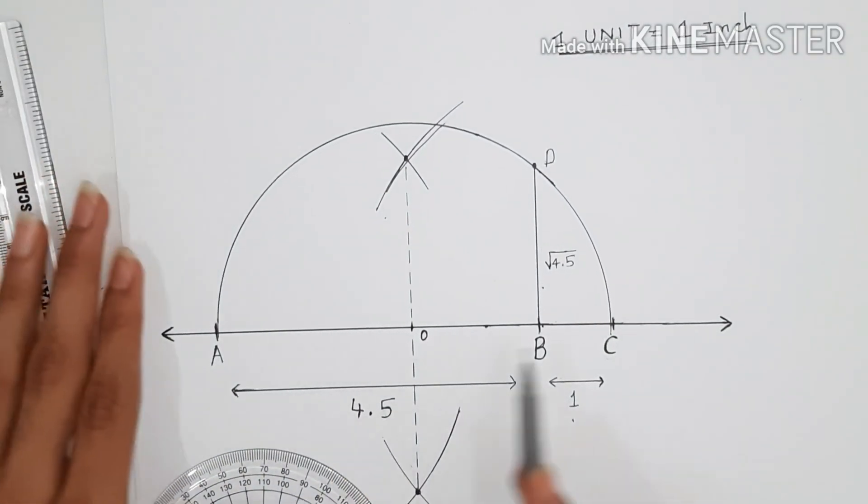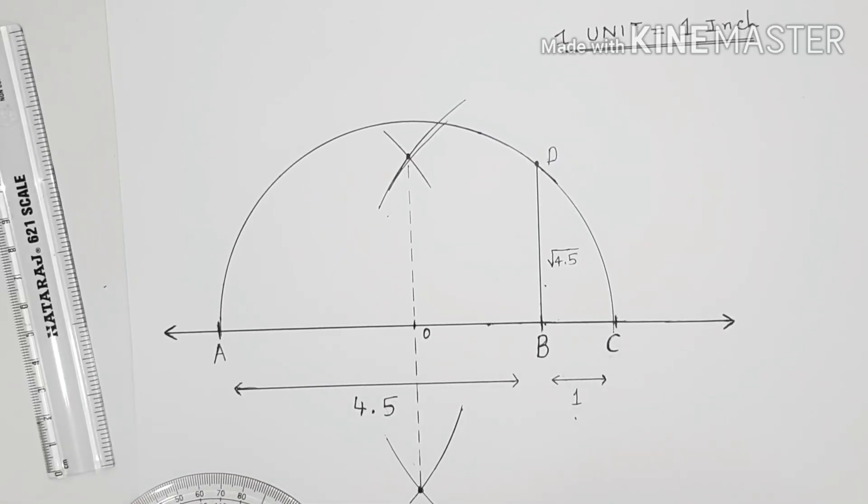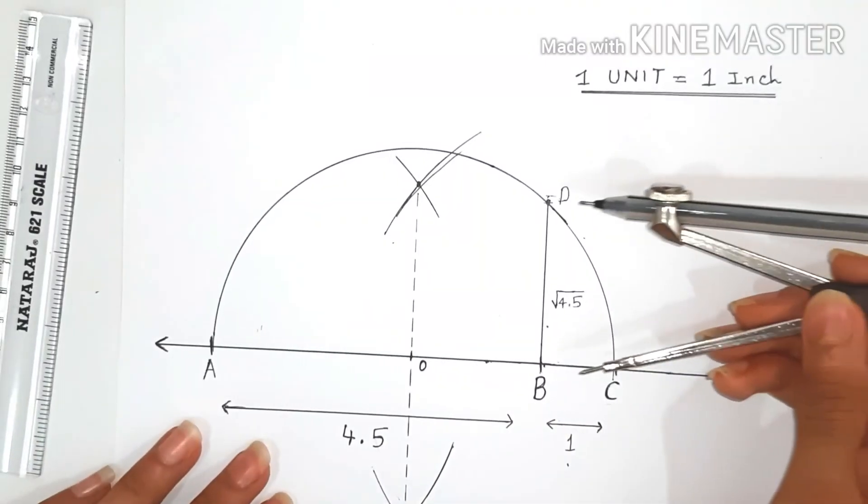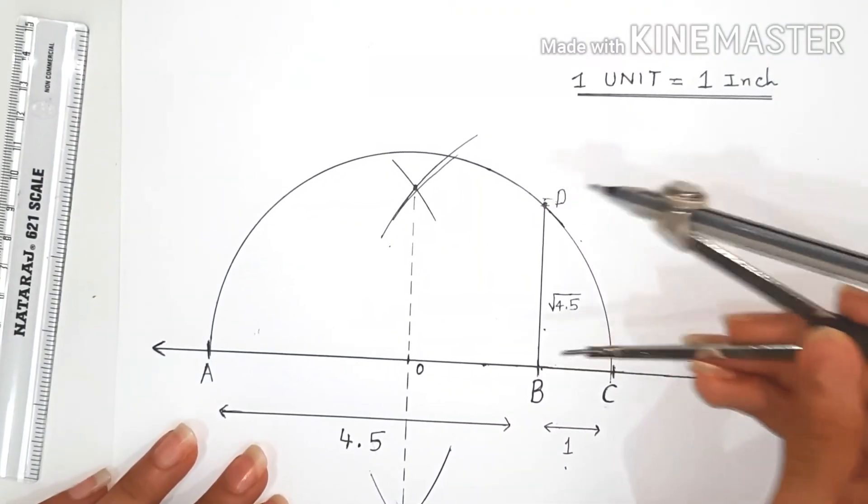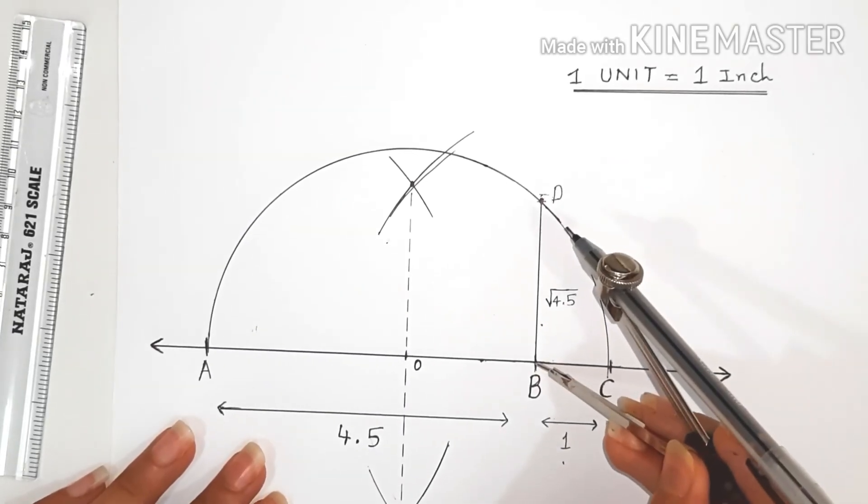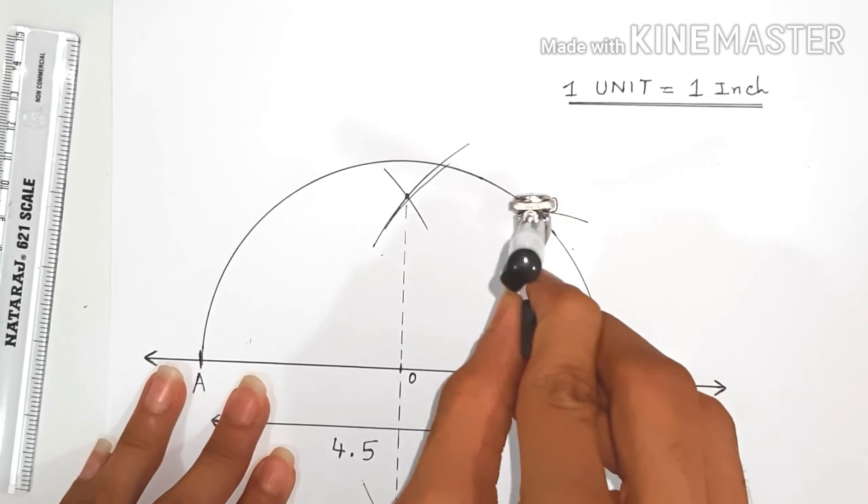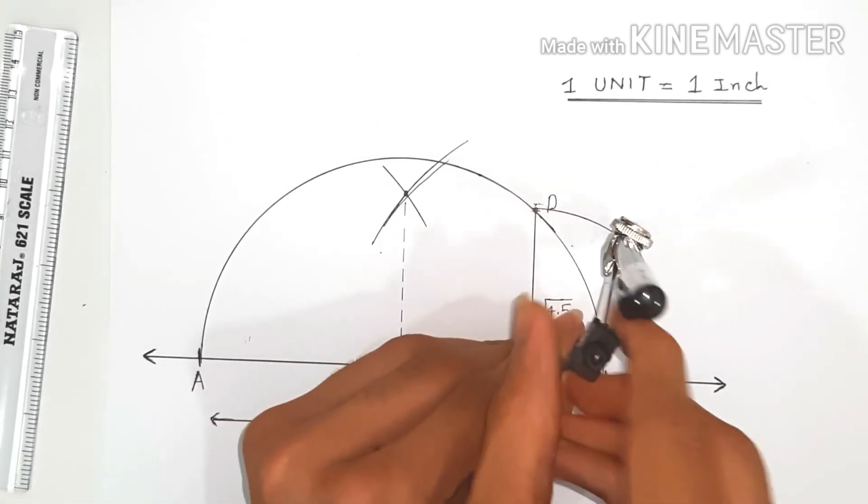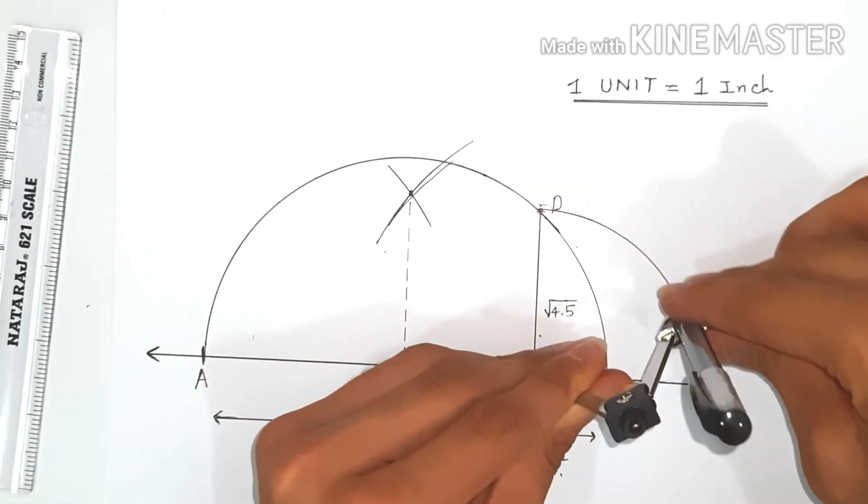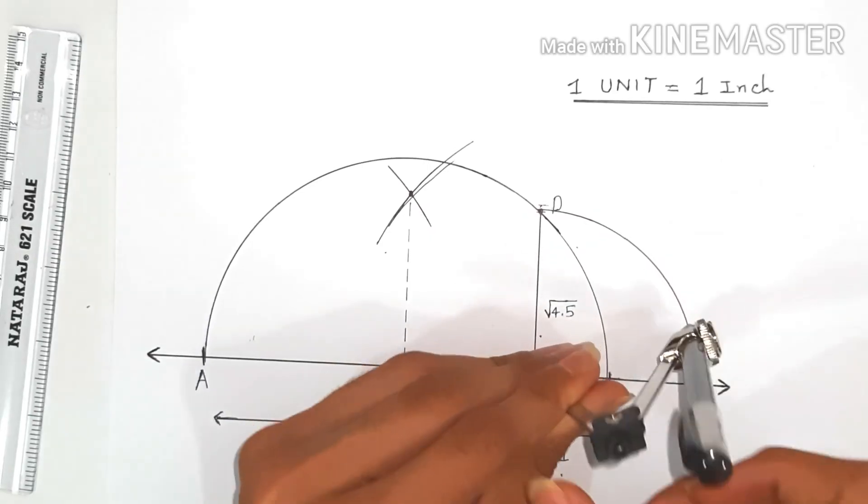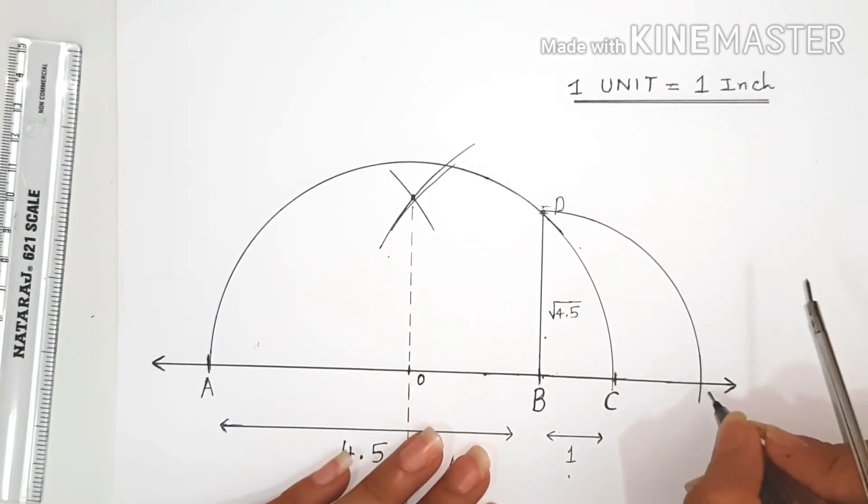For that, you take a compass and with radius equal to BD, that means square root 4.5, with B as the center, we'll create an arc which cuts through the line AC at a certain point. We'll name this point as point E.